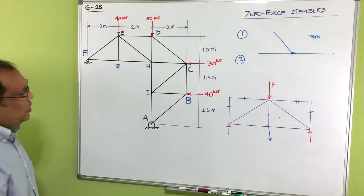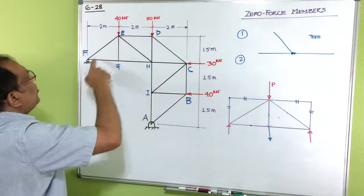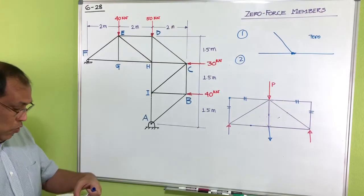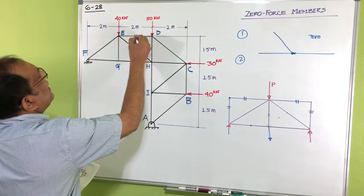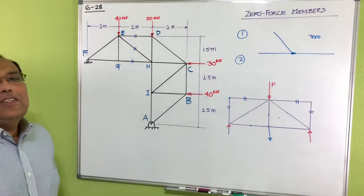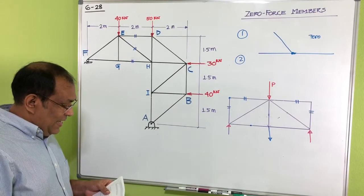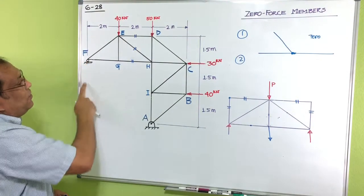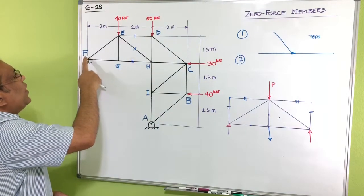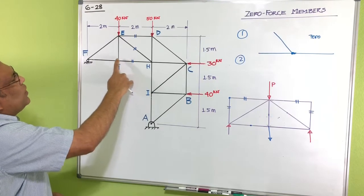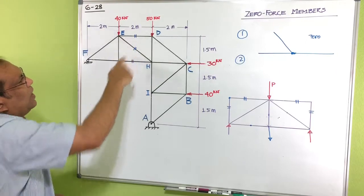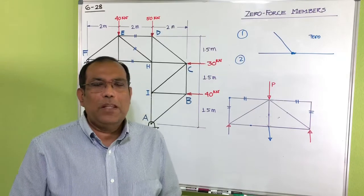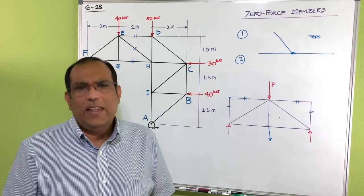Now let's move to our example, Problem 6-28. You can see a tower-type structure where F has a roller support and A has a pin support. We need to find the force in members ED, EH, and GH. With the joint method you'd have to start from joint F and work step by step, but there's no rule that says you must use only one method — you can combine section and joint methods.